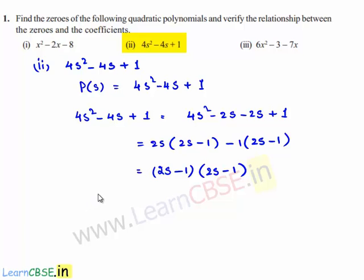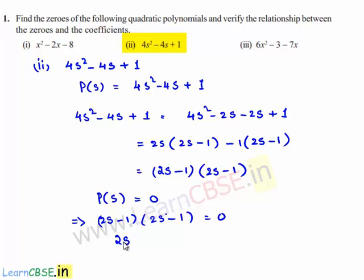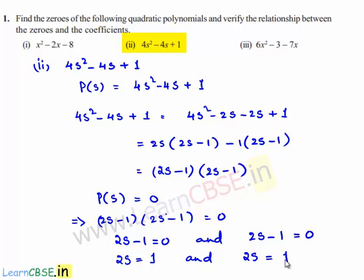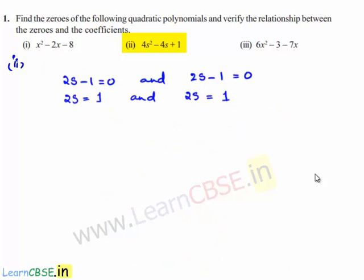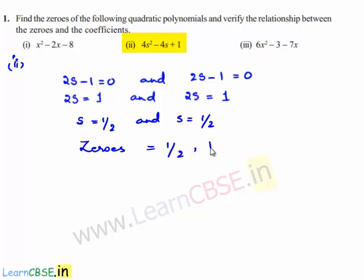In order to find the zeros of the polynomial, we need to equate the polynomial to 0. We will be getting (2s minus 1) times (2s minus 1) is equal to 0. So we can write 2s minus 1 is equal to 0 and 2s minus 1 is equal to 0. Transposing minus 1 to the right-hand side, we get 2s equal to 1 in both cases. Therefore, s is equal to 1/2 and s is equal to 1/2. The zeros of the polynomial are 1/2 and 1/2.